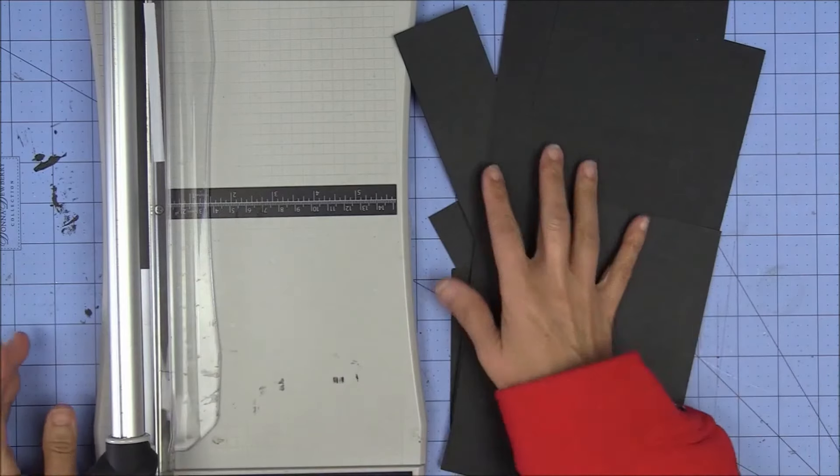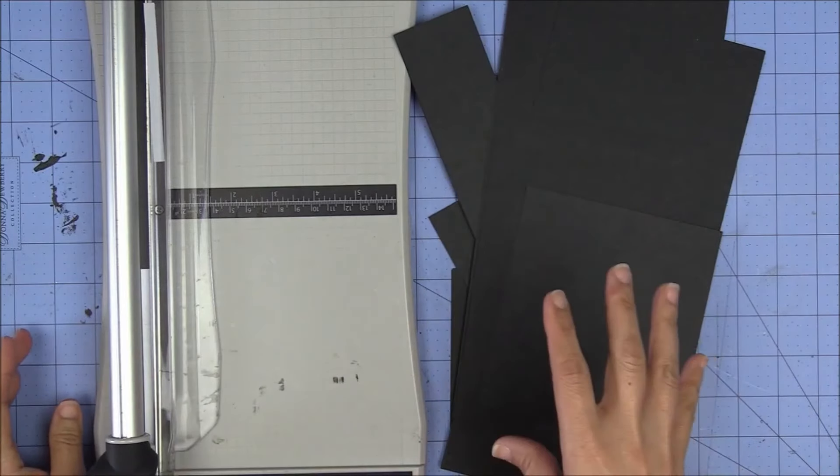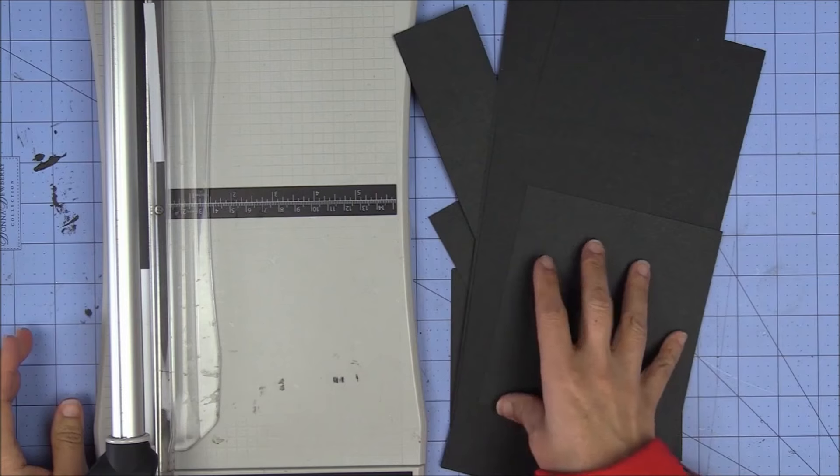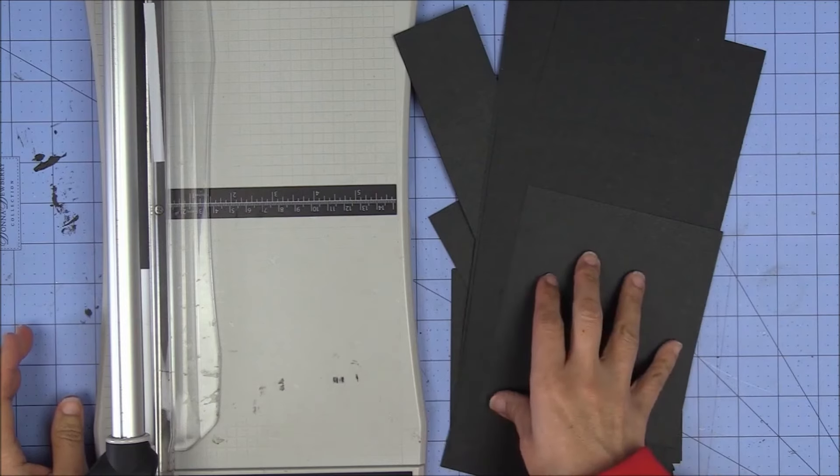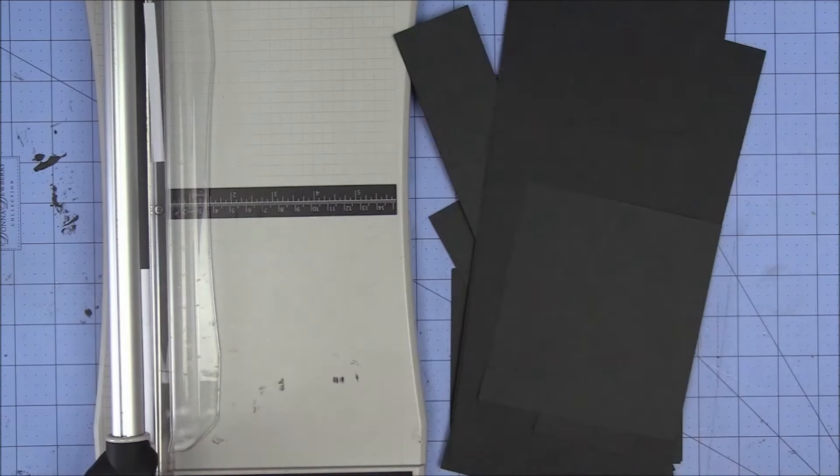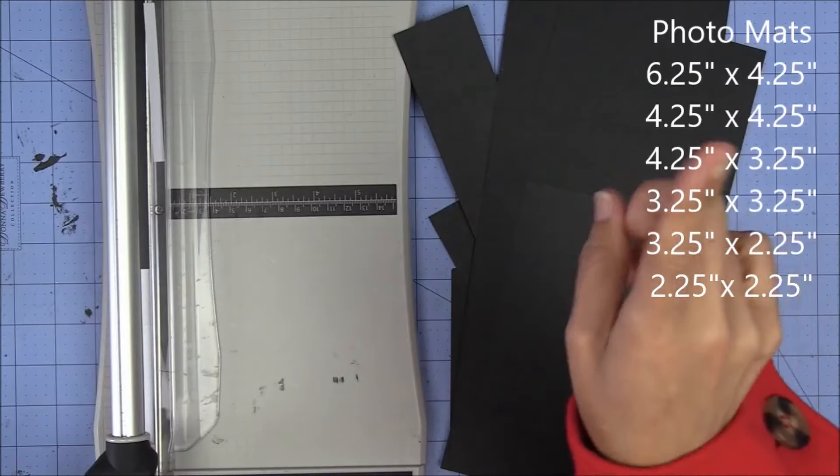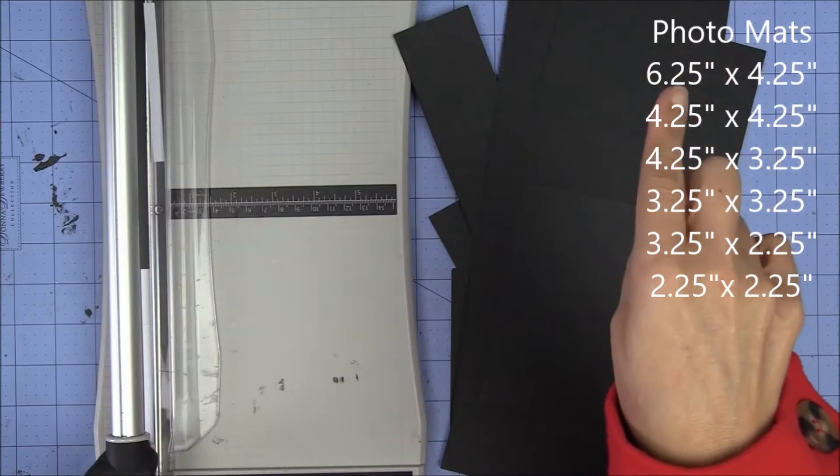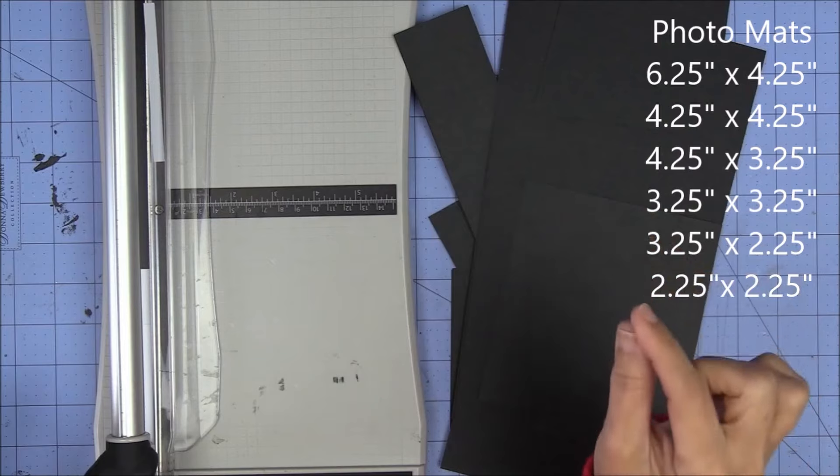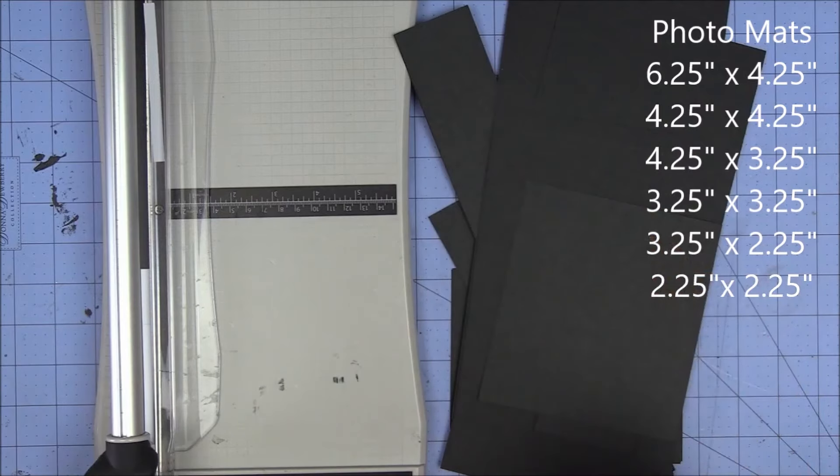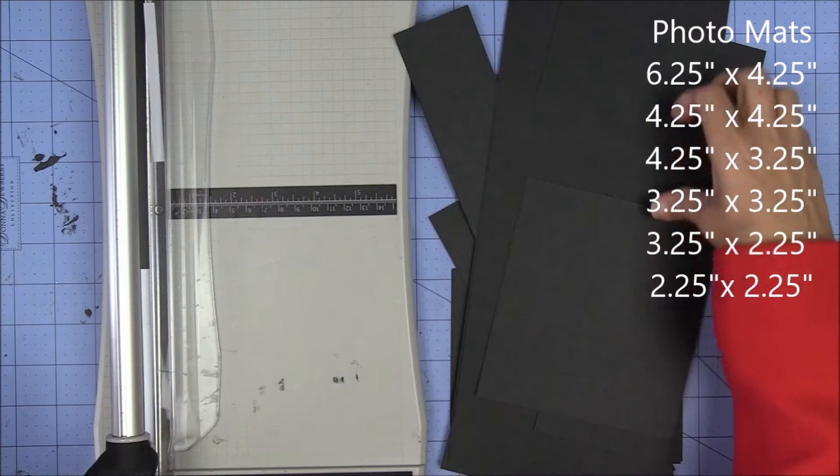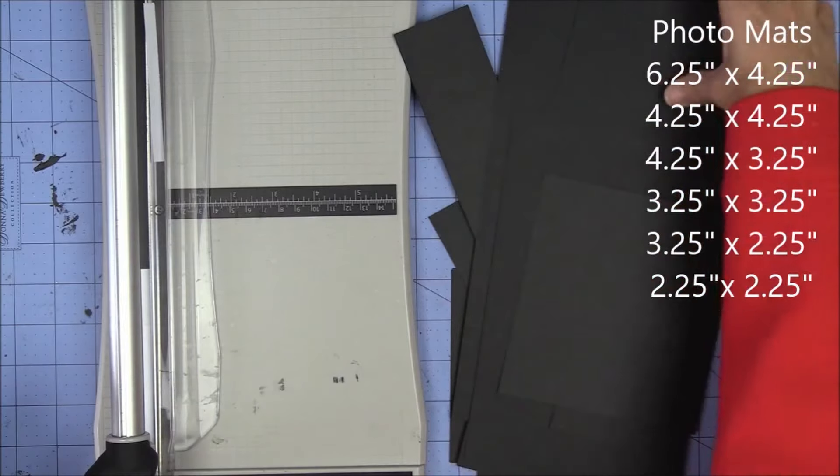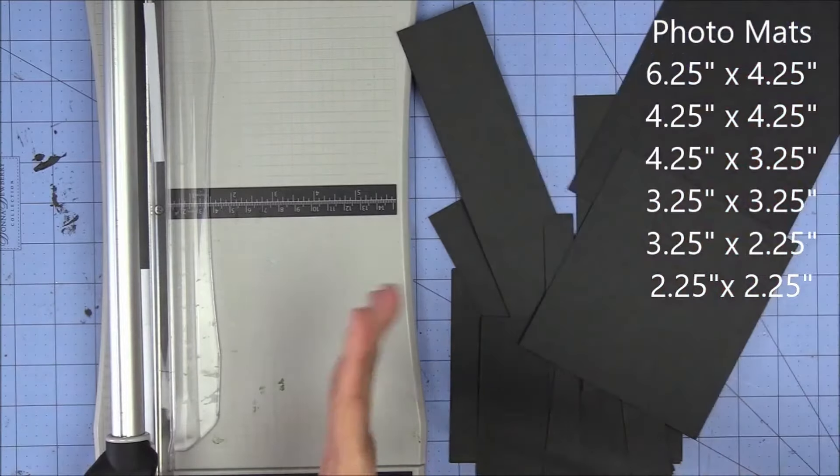Now what I like to do is take my scrap paper and scrap cardstock and I like to cut my photomats once I'm immediately done with a project. So right up here in this area, you're going to find my go-to measurements for photomats. You may want to write those down, because they're good. They're going to want to be your go-to measurements as well.